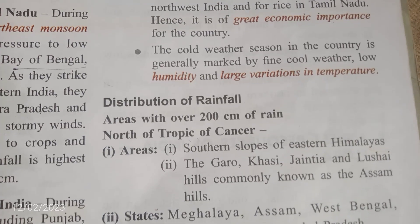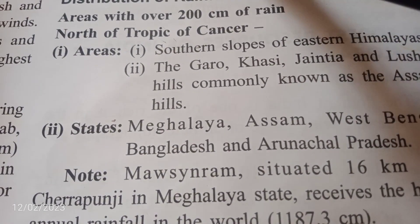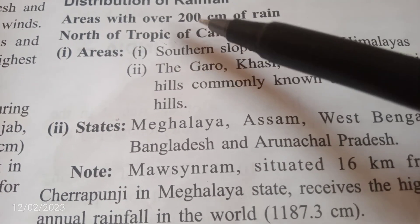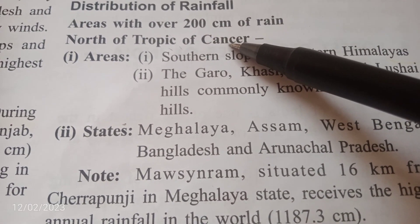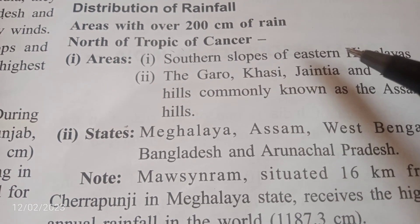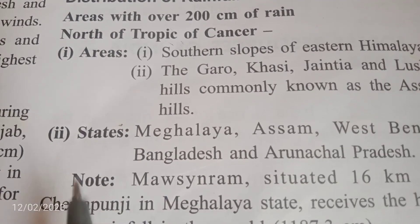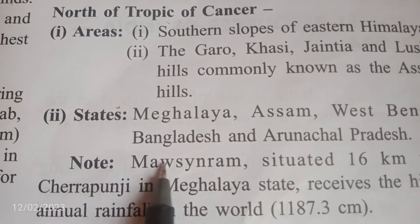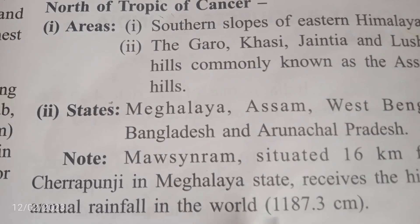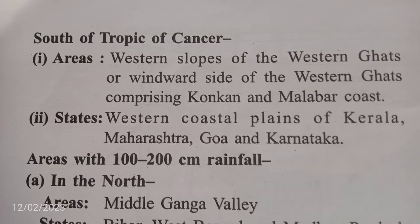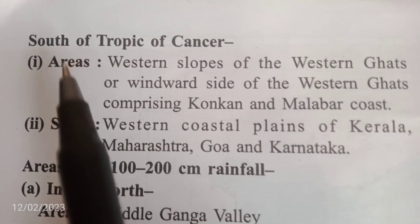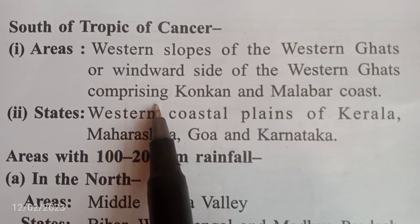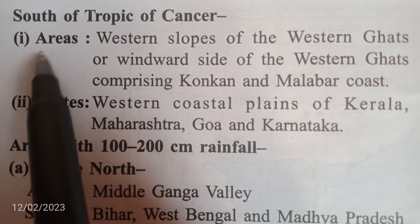The distribution of rainfall is very important in your syllabus and carries on to the 10th standard. Areas with over 200 centimeters of rainfall north of the Tropic of Cancer include the northern slope of the Eastern Himalayas, Garo, Khasi, and Jaintia Hills. States include Meghalaya, Assam, West Bengal, and Arunachal Pradesh. Mawsynram near Cherrapunji receives the highest rainfall in the world. South of the Tropic of Cancer, areas receiving more than 200 centimeters include the windward side of the Western Ghats, Konkan, and Malabar coast.